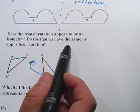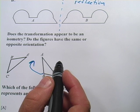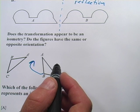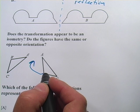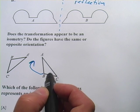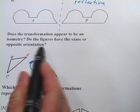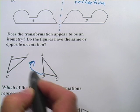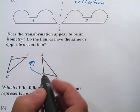The next question is, do the figures have the same or opposite orientation? When you reflect something, the orientation gets switched around. When you just rotate or translate something, the orientation is the same. And you can see in this one that the orientation is going to be the same.